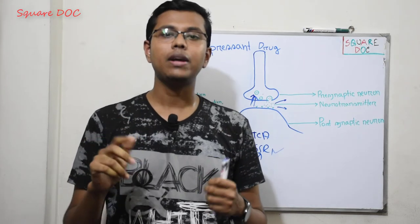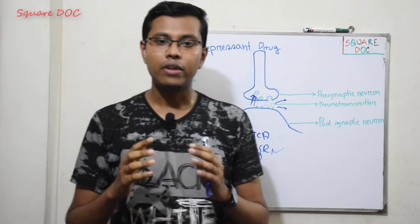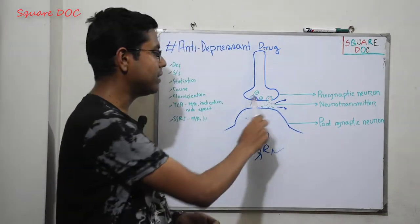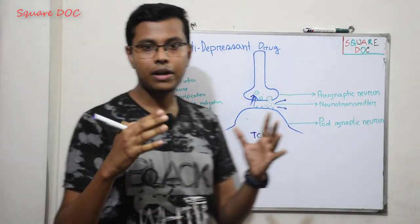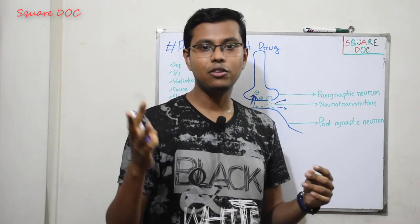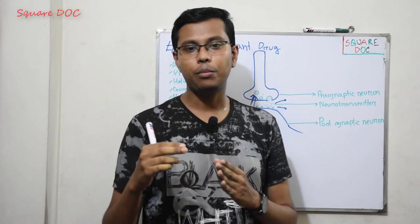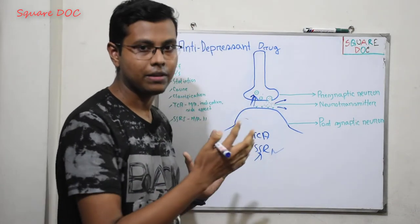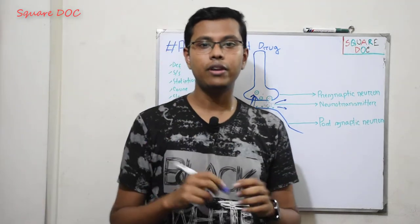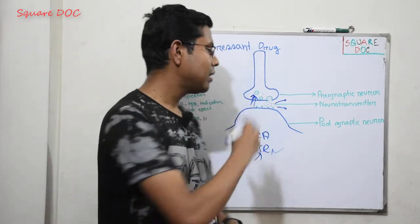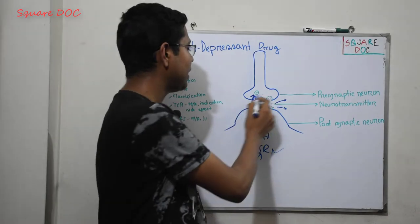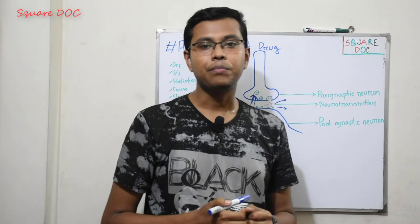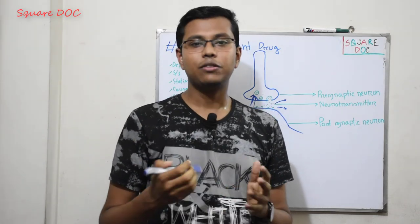Now let's discuss SSRI — Selective Serotonin Reuptake Inhibitor. SSRIs selectively inhibit serotonin reuptake in the synapse. While the three causes of depression involve dopamine, serotonin, and norepinephrine, SSRIs specifically target only serotonin levels. By selectively inhibiting serotonin reuptake in the synapse, the serotonin level increases, producing an antidepressant effect.